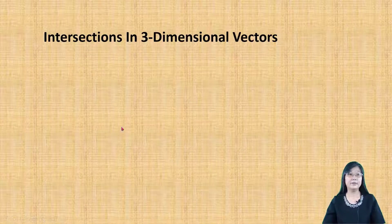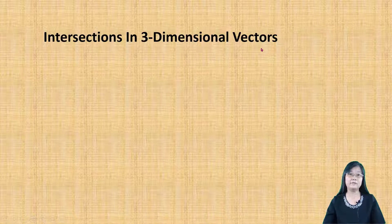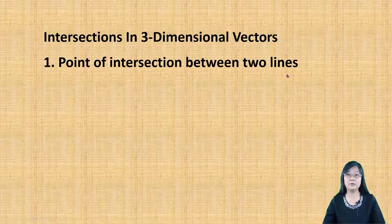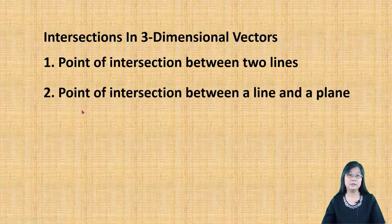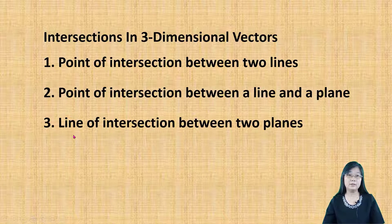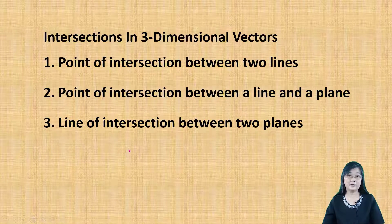In this video, I'm going to talk about the intersections in 3D vectors. Here, I'm going to focus on 3 types of intersections. The first one is point of intersection between 2 lines. The second one is point of intersection between a line and a plane. Then, the third one is line of intersection between 2 planes. Now, let's look into it one by one.